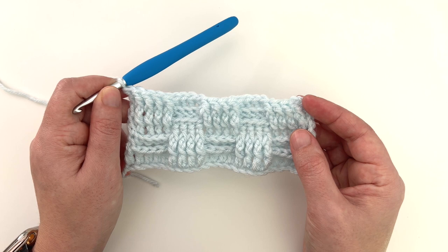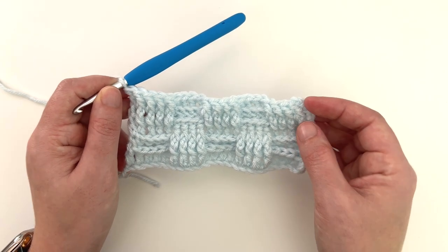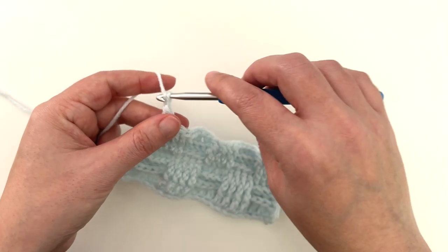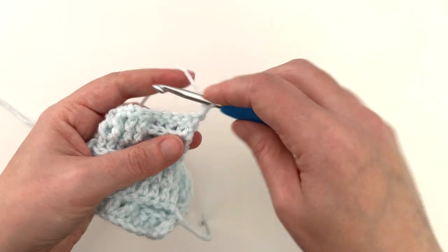And that is our first pattern repeat. So at this point, you'll repeat rows two through five until you get to the finished length. So I'm going to work a couple more repeats. And then I'll show you my finished swatch.